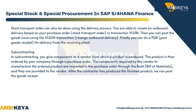Subcontracting: In subcontracting, you give components to a vendor from which a product is produced. The product is then ordered by your company through a purchase order. The components required by the vendor to manufacture the ordered product are imported in the purchase order through the BOM (bill of materials) and are provided to the vendor. After the contractor has produced the finished product, we can post the goods receipt.